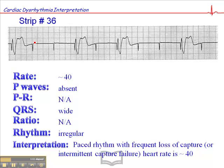When you see pacer spikes that stand alone without a QRS, that means there's capture failure. Now there's electrical capture and there's mechanical capture. Failure of electrical capture means we see a pacer spike without a QRS — that's loss of capture. If we check for a pulse and there's a pacer spike with no pulse, then that's failure of mechanical capture. We should be able to feel a pulse with successful capture — that would confirm mechanical capture. We know there's electrical capture when we have a pacemaker spike and a QRS complex.